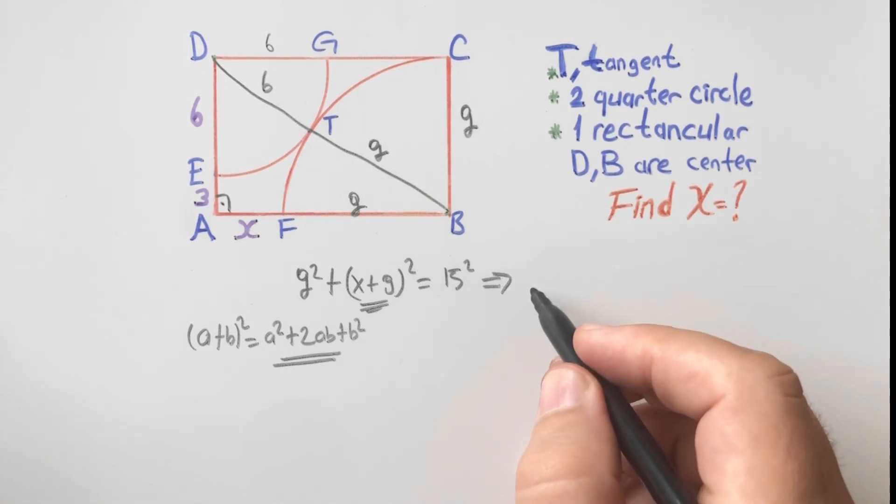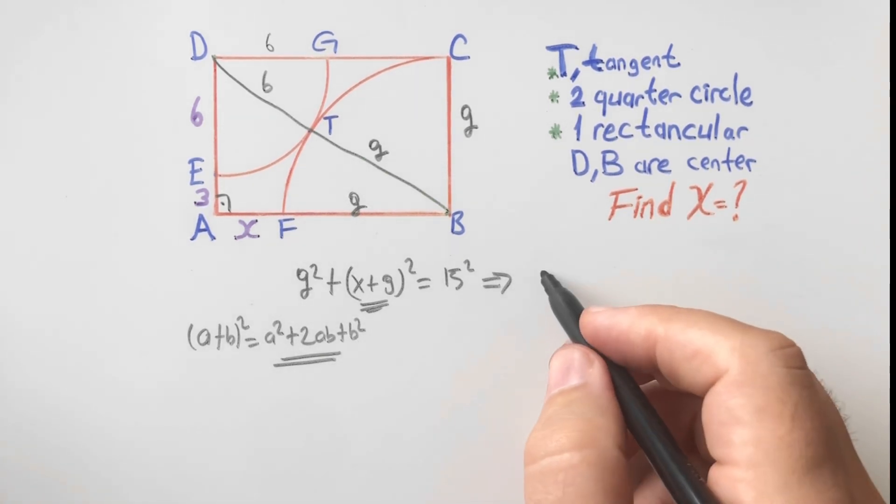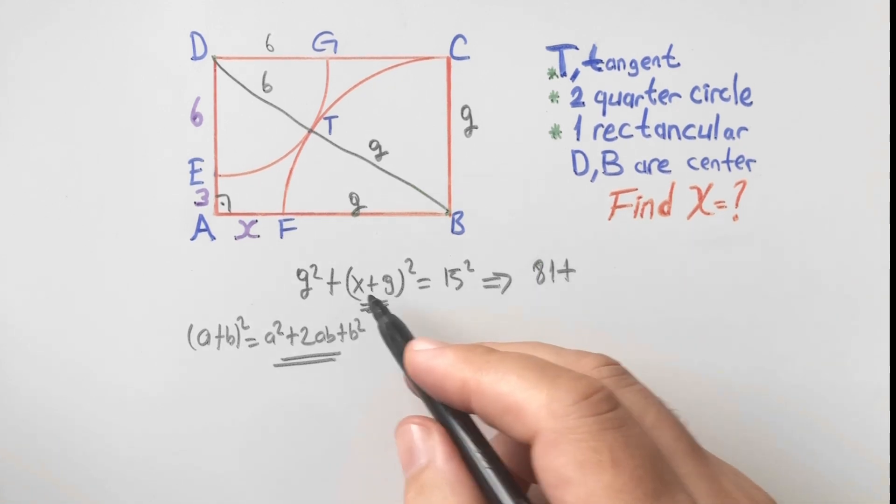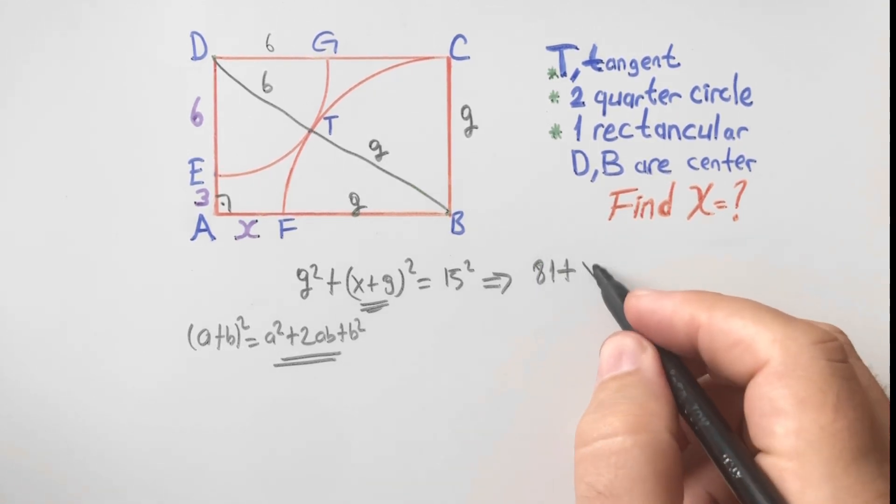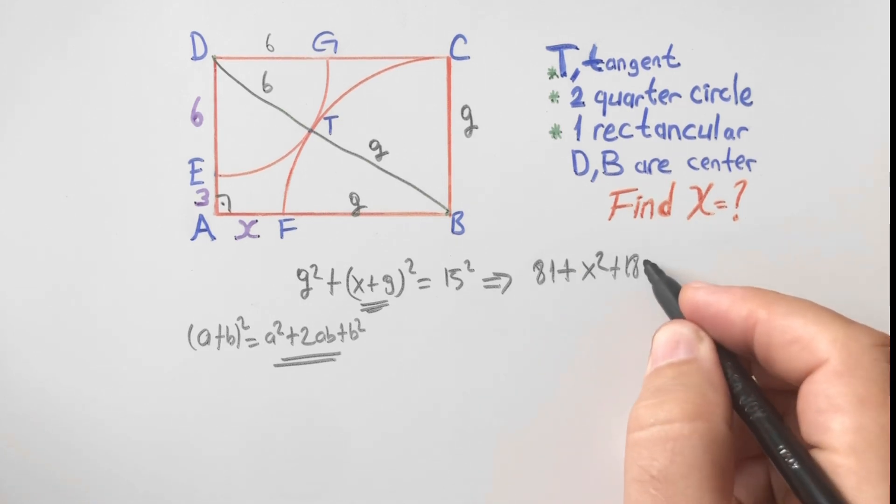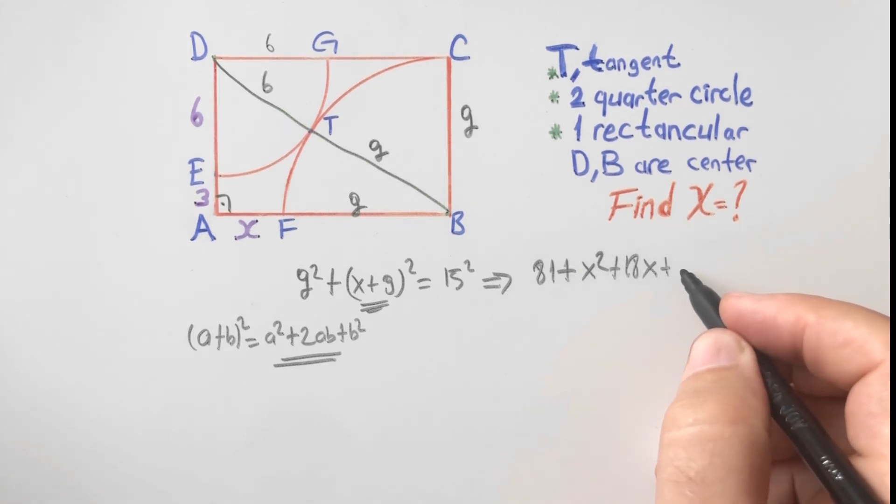Let's go ahead. Nine squared equals 81 plus x squared plus 18x plus 81.